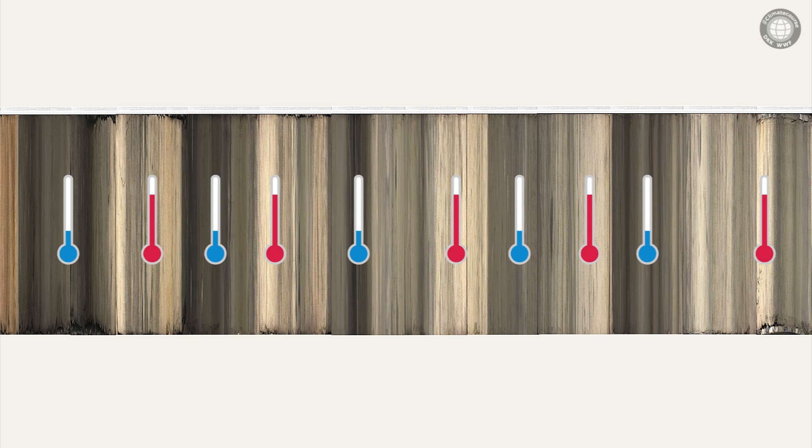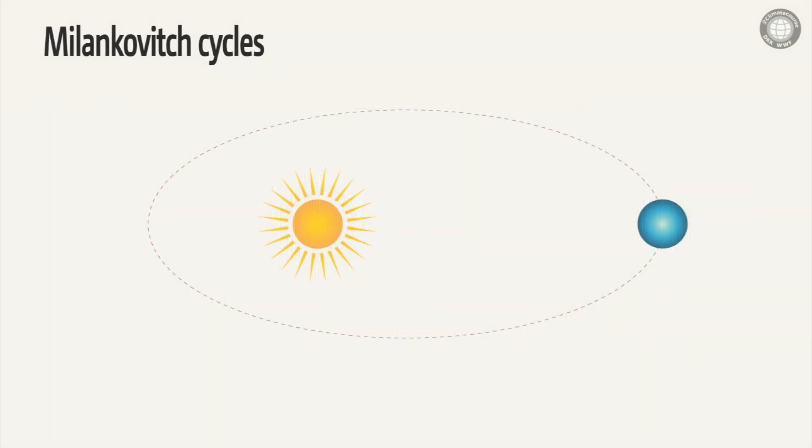According to the well-established Milankovitch theory, astronomical fluctuations in the Earth's orbit around the Sun are the cause. In order to understand the basis for this theory, let's consider Earth from space.